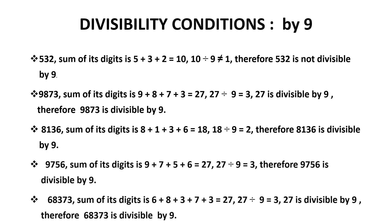The number 68373: the digits sum up to 27. 27 is divisible by 9, so the number 68373 is divisible by 9.